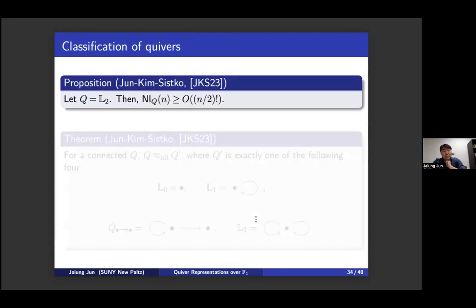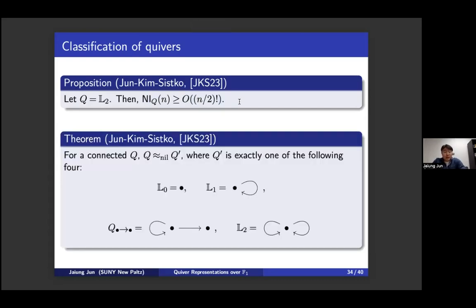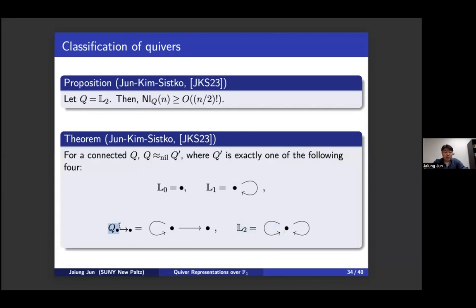Likewise for the two-loop quiver L2: we enumerate coefficient quivers and prove the growth function is strictly larger than that of any proper pseudo-tree. This completes the classification: for a connected quiver Q, it is equivalent to exactly one of four quivers — L0 (finite type, single vertex or tree), L1 (Jordan quiver, bounded type), the pseudo-tree representative (H1 rank one), or L2 (H1 rank ≥ 2, unbounded type).